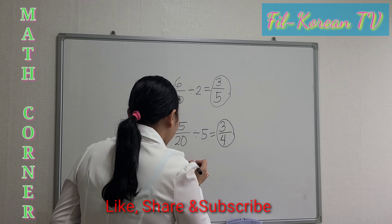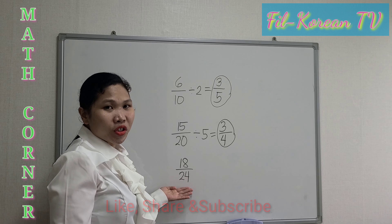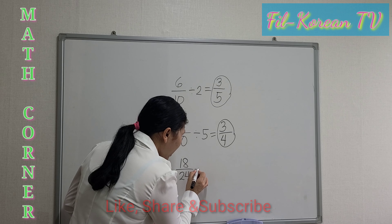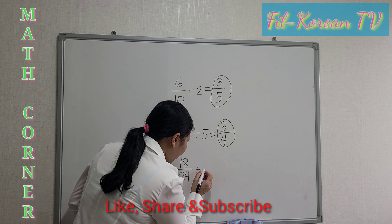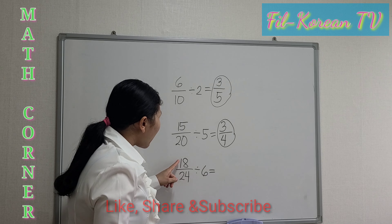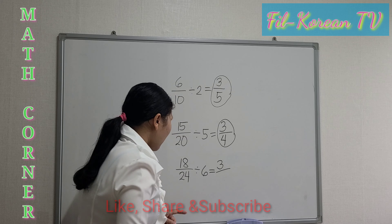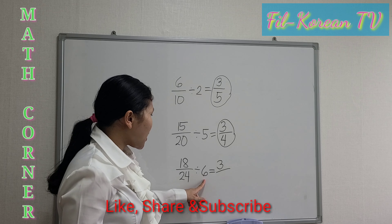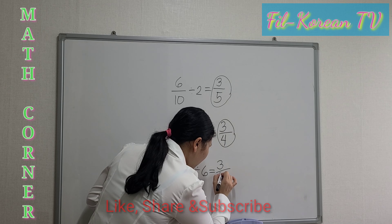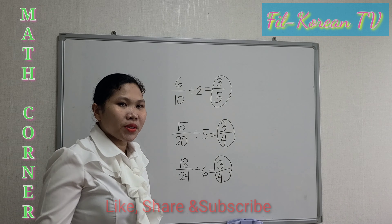Next example: 18 over 24. The GCF of 18 and 24 is 6. So let's divide: 18 divided by 6 equals 3, and 24 divided by 6 equals 4. So the answer is 3 fourths.